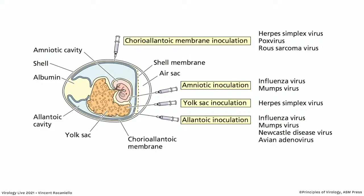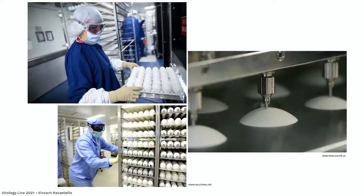We don't use these anymore except for influenza viruses, because we now have cells in culture. For influenza viruses, we still use this to make vaccines, as we'll talk about later. Many influenza virus vaccines are grown in embryonated chicken eggs — it's inoculated in an automated process, put in racks, incubated, and then harvested.